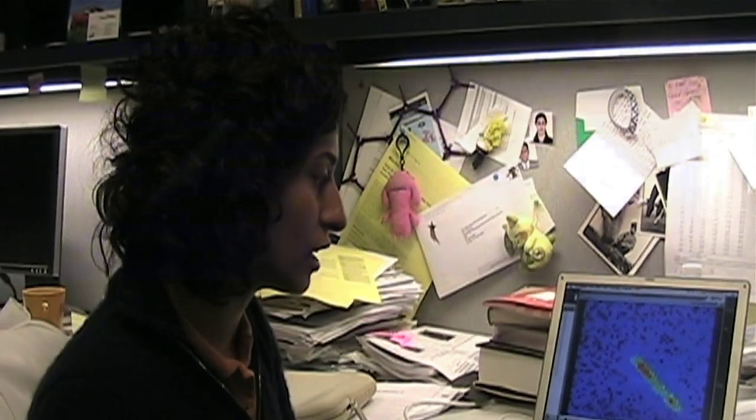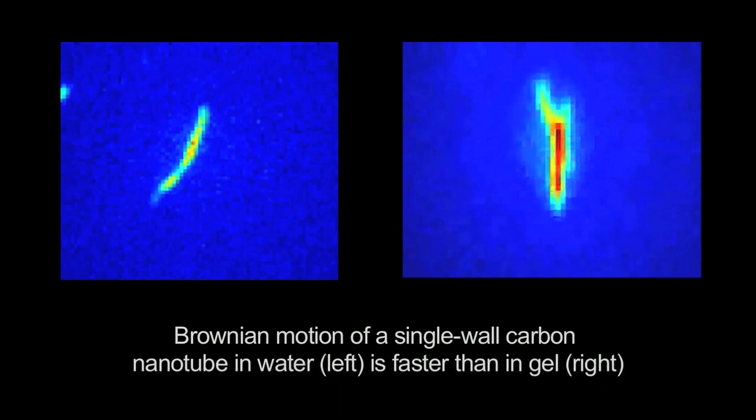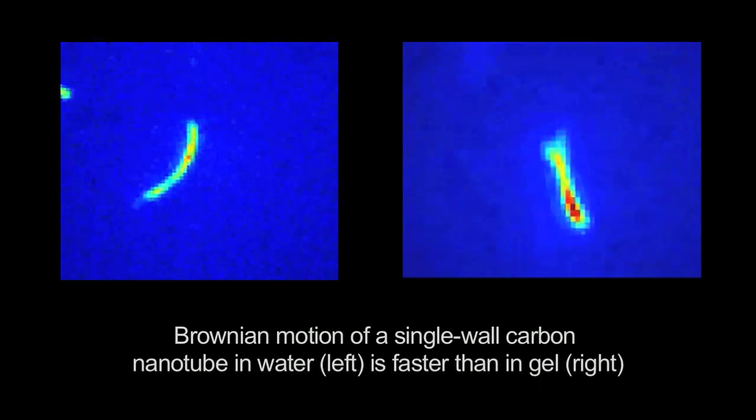But if you have it inside a gel, you have other molecules around the nanotube so it's not going to move as freely as it moves in water. You can basically have an idea about what kind of an environment your nanotube is swimming in.